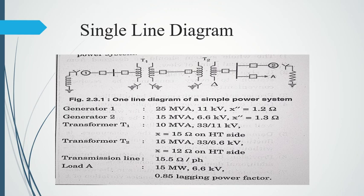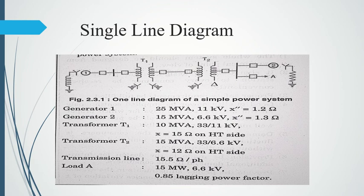Depending on the information required, some elements may or may not appear in the diagram. For example, if you want to do a steady-state analysis of a circuit breaker, you may need relays or switches, but you may not see the relays in the single line diagram of your system. It is good for understanding power flow, and helpful for fault calculations, but not necessarily complete for every type of analysis.